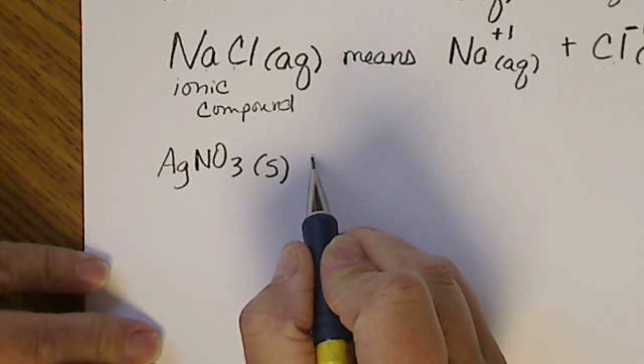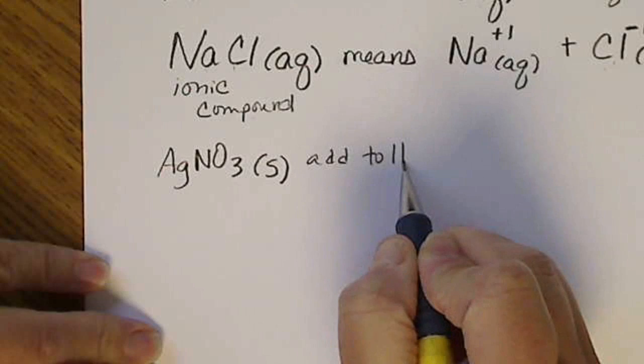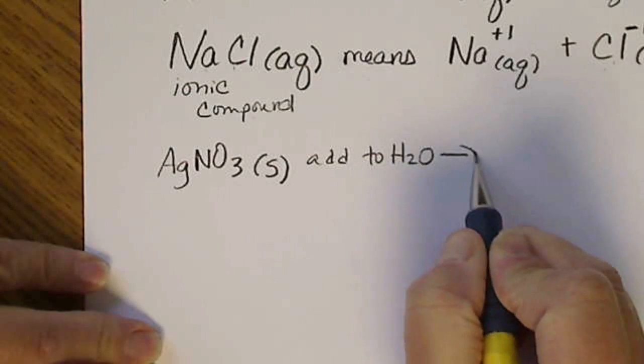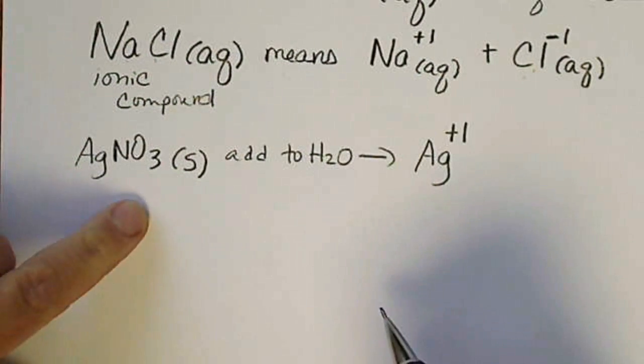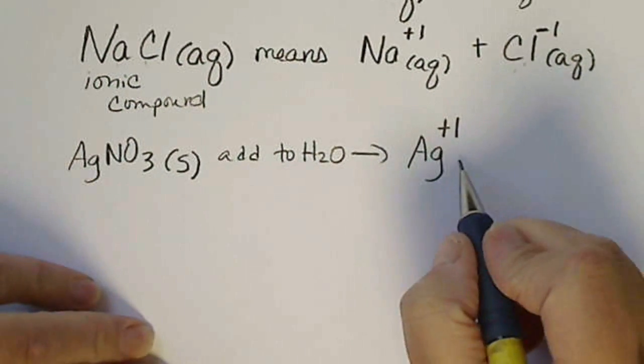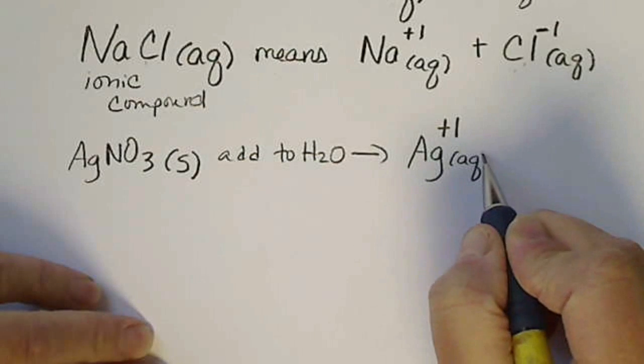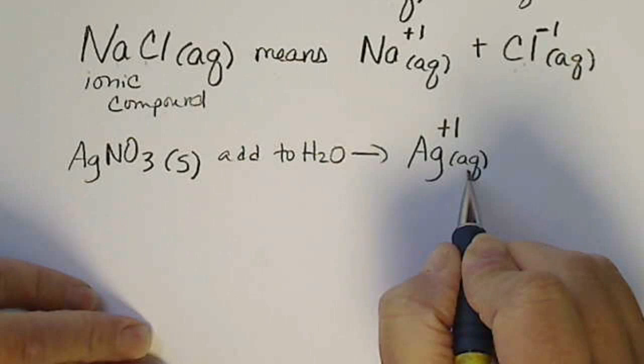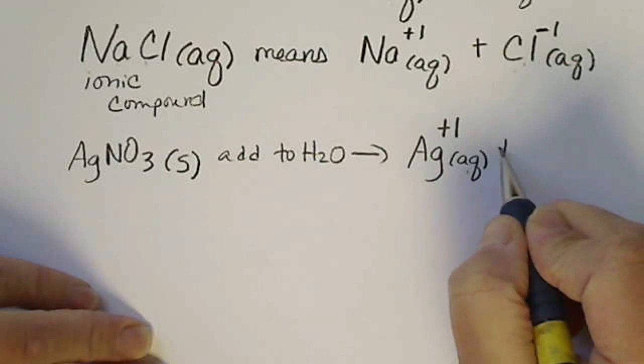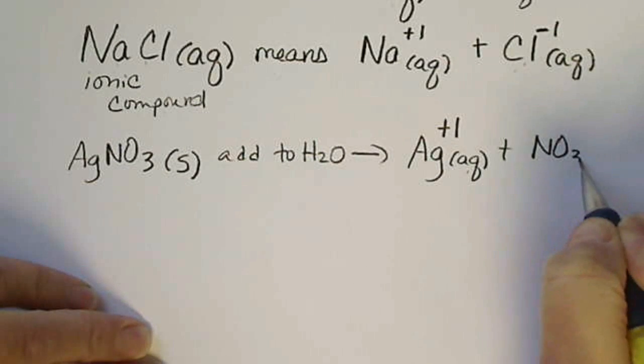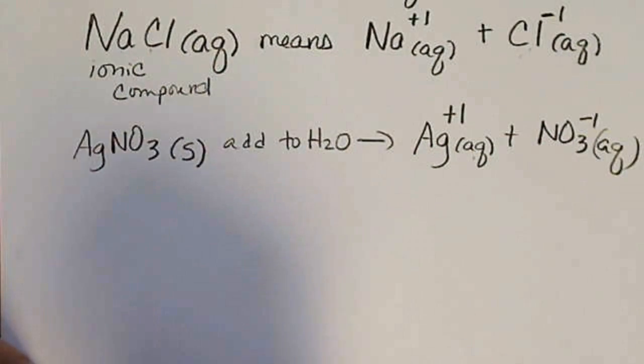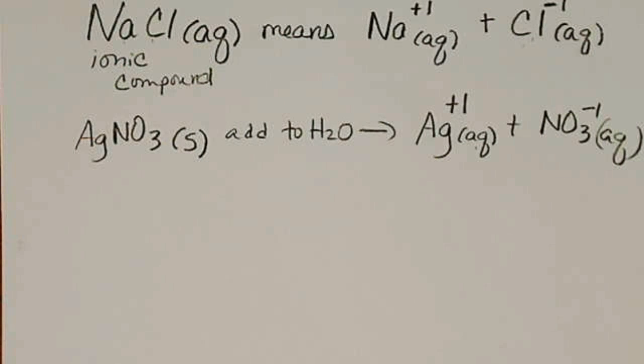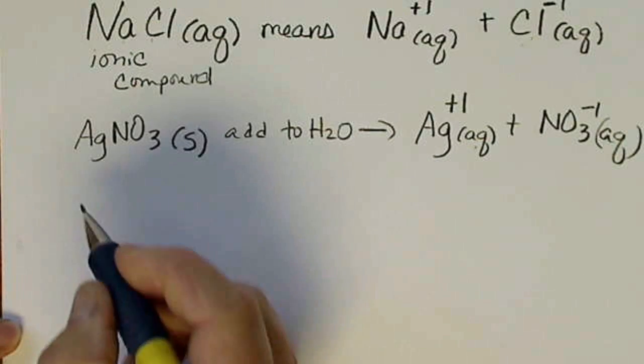Just recognizing that, again, if we dissolve this in water, so we add to water, what we're going to have are silver ions in solution. This ionic compound would break apart into Ag, and we would put this aqueous that shows what state that's in, plus we'd have nitrate ions in solution. We're going to see aqueous, and we are going to be paying attention to ways of expressing how concentrated a solution is.